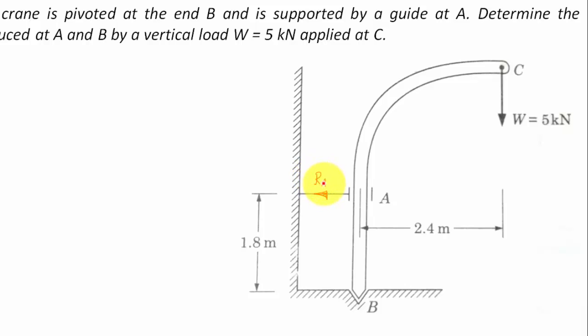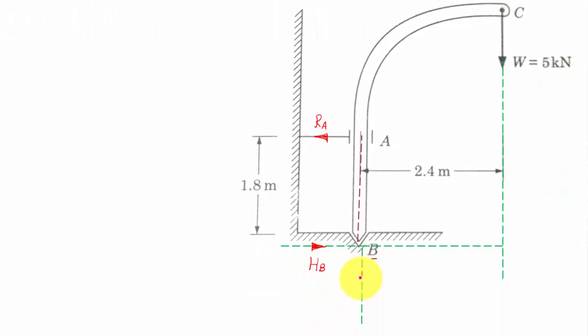Secondly we have this point B, where the pivot is. This pivot restricts the motion of the crane in both the horizontal as well as the vertical direction, and hence you can have two sorts of forces. One is going to be horizontal this way, let's call this force HB, and one more force in the vertical direction, let us call this force VB. Both these forces collectively will have a resultant RB.